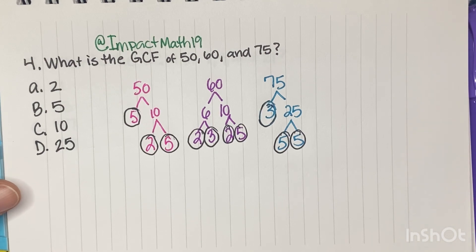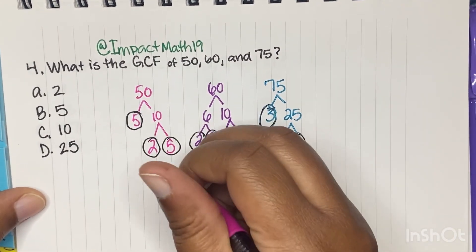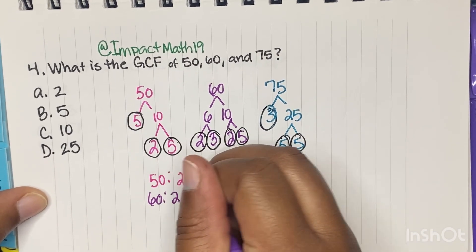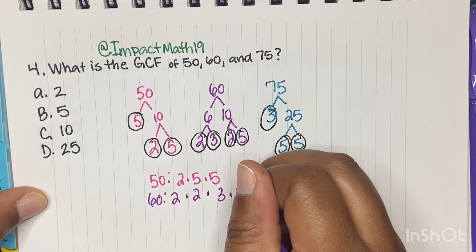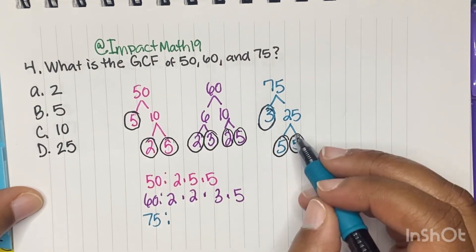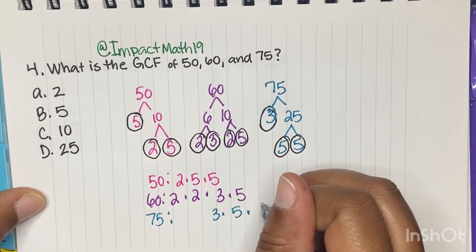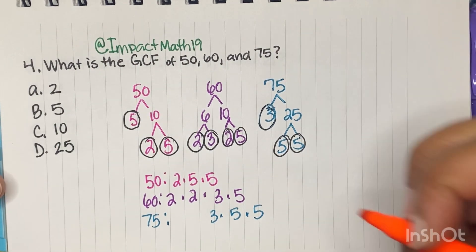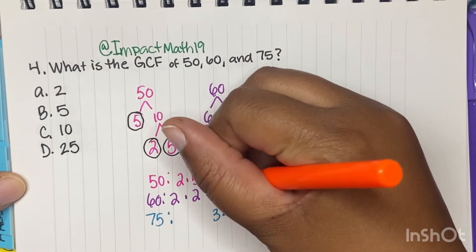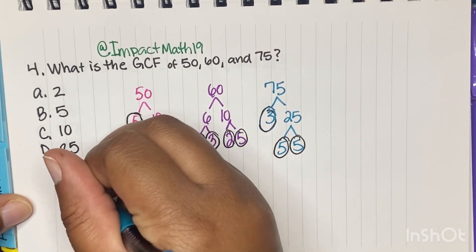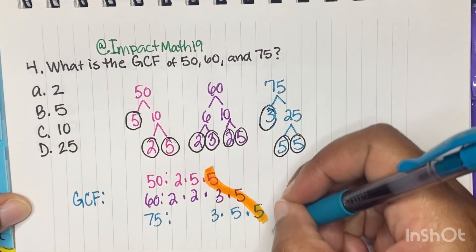So let's list them out. So we have 50. We have a two times five times five. For 60, we have a two times two times three times five. And then for 75, we have a three and a five times five. So we're looking for something that they all have in common. All three numbers.